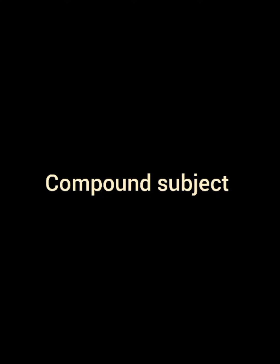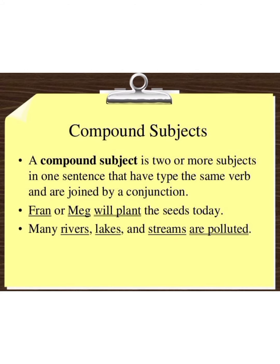But today we are going to study compound subject. The name may seem difficult or confusing, but we are not going to be confused. Compound subject is two or more subjects in one sentence that share the same verb and are joined by a conjunction. In other words, two subjects in one sentence sharing one action is called compound subject.